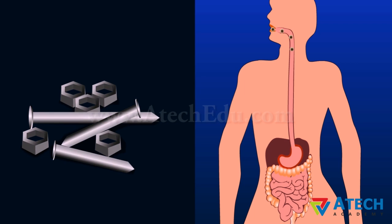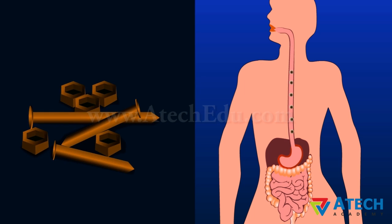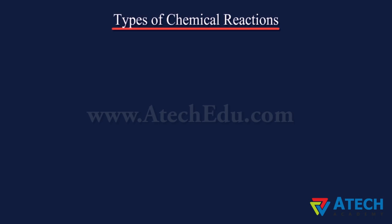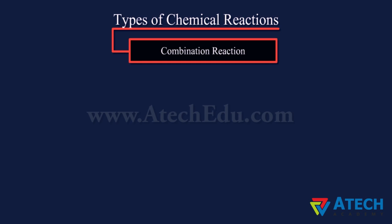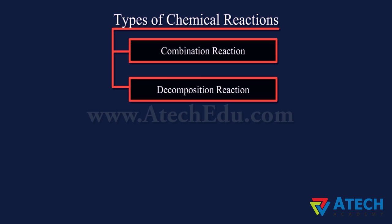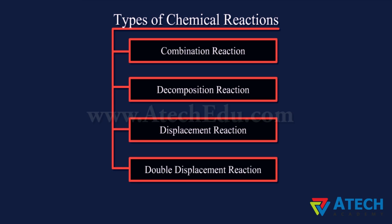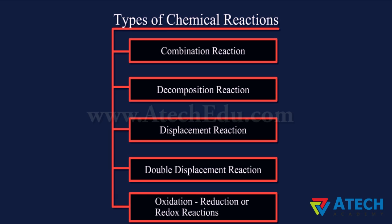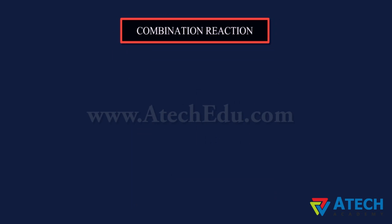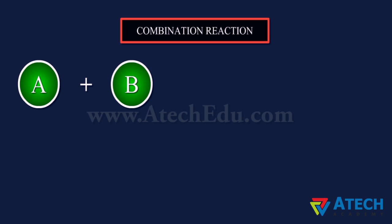In our everyday life, we see many examples of chemical reactions. Rusting of iron nails is an Oxidation Reaction, while Digestion of Food is a Decomposition Reaction because food is broken down into simpler substances. Different types of chemical reactions are Combination Reaction, Decomposition Reaction, Displacement Reaction, Double Displacement Reaction, and Oxidation-Reduction or Redox Reactions.